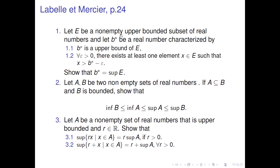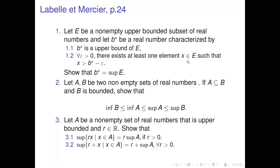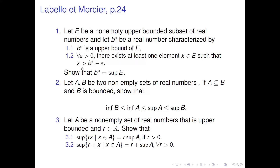Let E be a non-empty, upper-bounded subset of real numbers, and let B* be a real number characterized by: (1) B* is an upper bound of E; (2) for any epsilon greater than 0, there exists at least one element x in E such that x is greater than B* minus epsilon. Show that B* equals supremum of E.